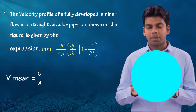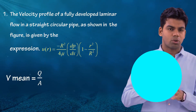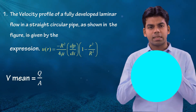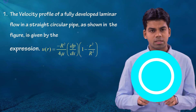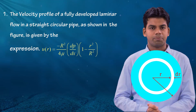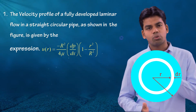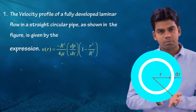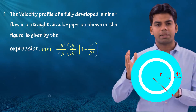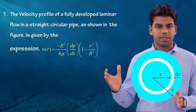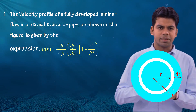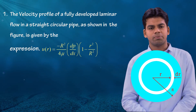Since the velocity is not constant throughout the section, we take a small strip of thickness dr at radius r from the centre of the pipe. We will determine the discharge from this small strip and then integrate it from 0 to R throughout the pipe to get the complete discharge.